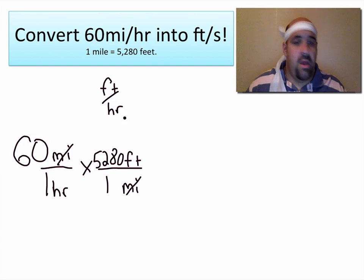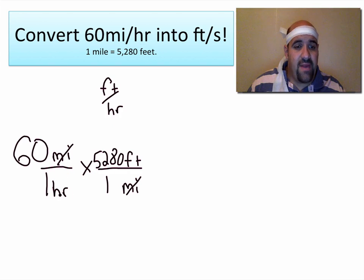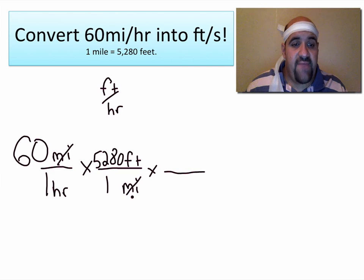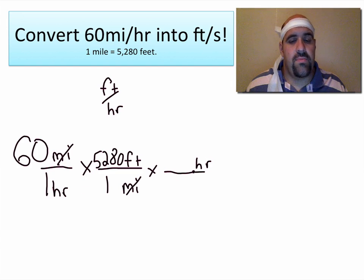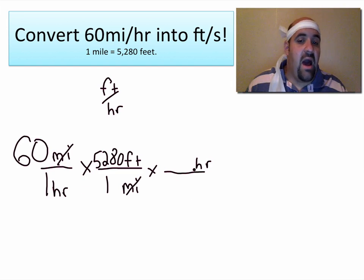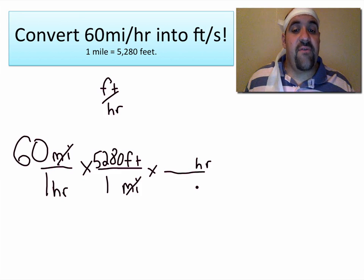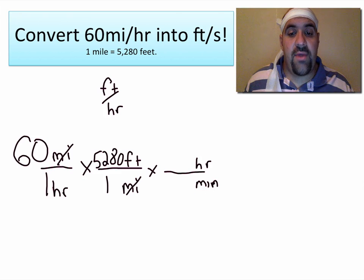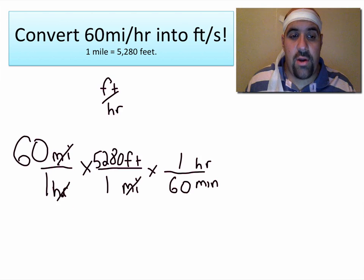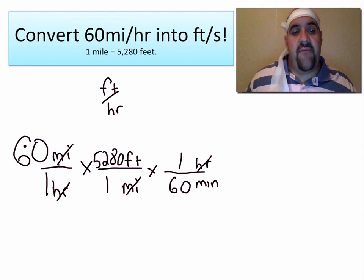But I want to know feet per second, so now I have to get rid of this hour in the denominator. I multiply by another blank fraction — if hour is on the bottom here, I need hour on top so they will cancel. A lot of people don't know the direct conversion between hours and seconds, but we do know that one hour is 60 minutes. So I put one hour on top and 60 minutes on the bottom — these hours cancel.